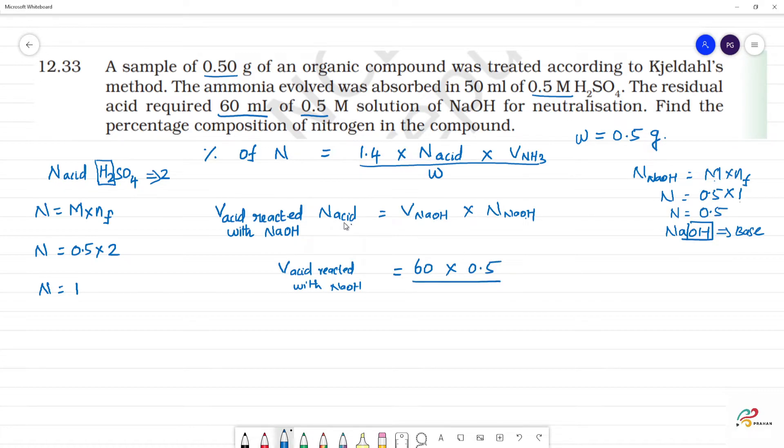By normality of acid, we can calculate 1N, that is 1. Cancel, this is ml. So 60 into 0.5 is equal to 30 ml. This is volume of acid reacted with NaOH.